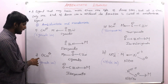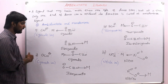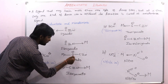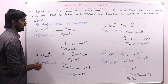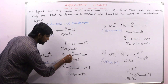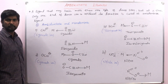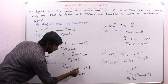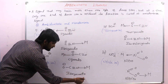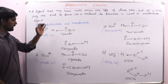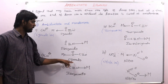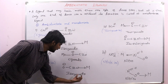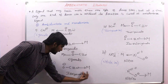Next is the cyanate ion, OCN⁻. Here also, if this ligand forms a bond through the oxygen atom with the central metal atom, that is called cyanato. If the ligand forms a bond through the nitrogen atom with the central metal atom, that is called isocyanato. So: cyanato — bonded through oxygen; isocyanato — bonded through nitrogen.